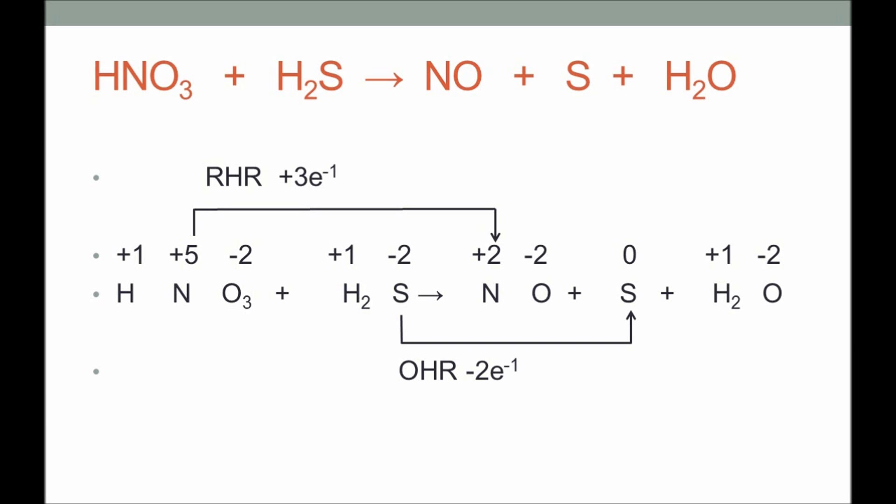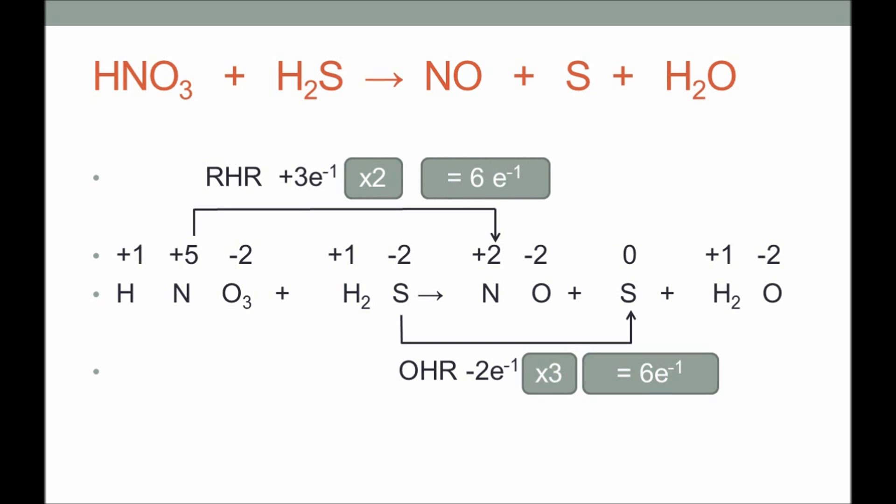Since the numbers are odd and even, we find the smallest whole number common to both — multiplying 3 and 2 gives 6. So for the oxidation half-reaction, multiplying 2 electrons by 3 produces 6 electrons. Similarly, for the reduction half-reaction we need 6 electrons, achieved by multiplying 3 electrons by 2. The numbers 3 and 2 become the coefficients of hydrogen sulfide and nitric acid respectively, giving us a balanced equation.